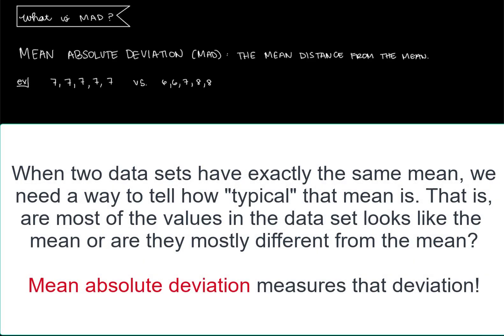Hi everyone, Christina Silver from Cal State Long Beach here, and in this video we'll be answering the question, what is MAD? Mean absolute deviation, which is what MAD stands for, is the mean distance from the mean.